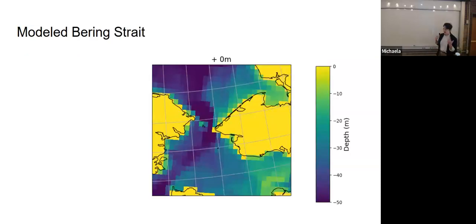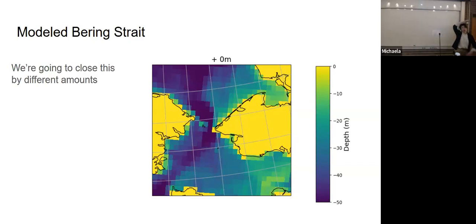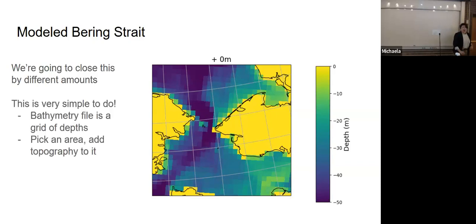This is back to topography, bathymetry. Yellow is shallower. Purple is deeper. That's the land, Alaska. That's Siberia. Here is the channel. That's the Bering Strait. Our goal is to close this by different amounts. We're going to make it shallower. We're going to make it all the way open, all the way closed, and we're going to run some experiments with it only partially open. This is really easy to do.